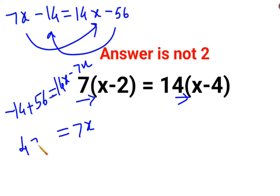And here we have this as 42. In order to find the value of x, you will divide both sides by 7. So the answer for x is supposed to be just 6.